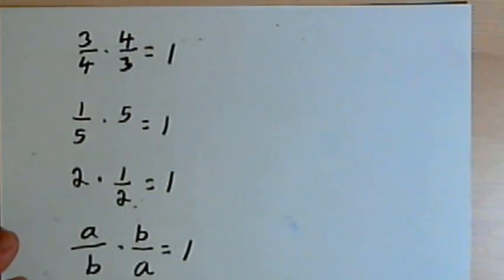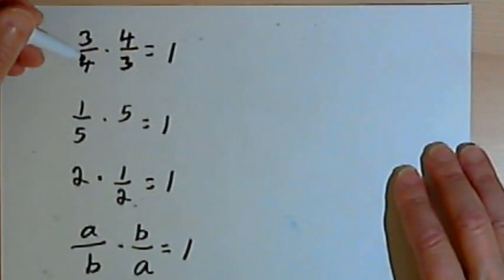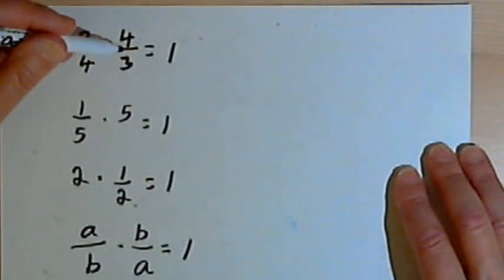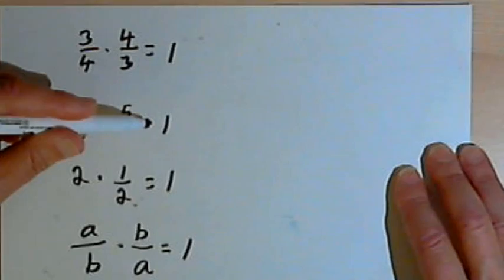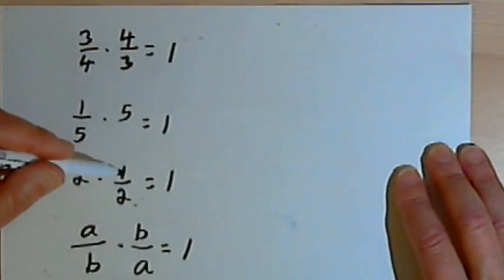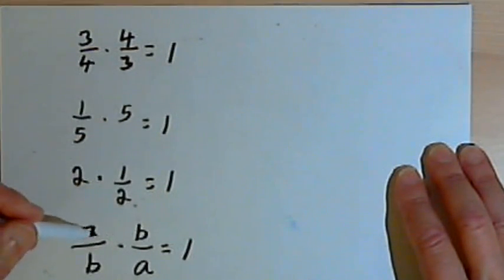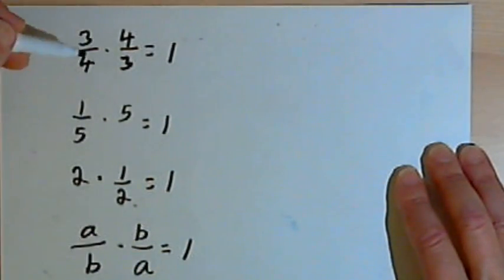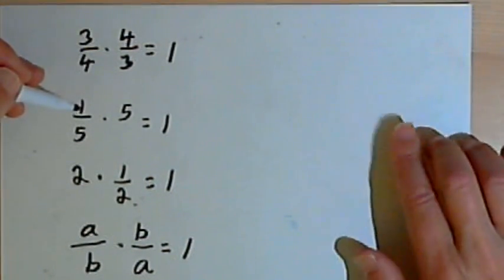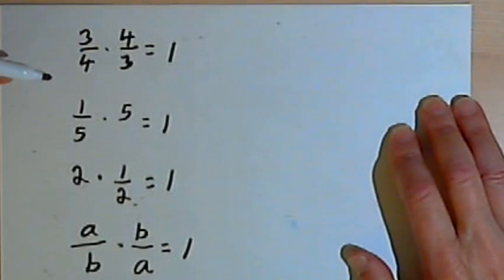I've got four equations here. I've got 3 over 4 times 4 over 3 equals 1, and then 1 over 5 times 5 equals 1, 2 times 1 half equals 1, and a over b times b over a equals 1. Each of these equations is an example of the way the multiplicative inverse works.